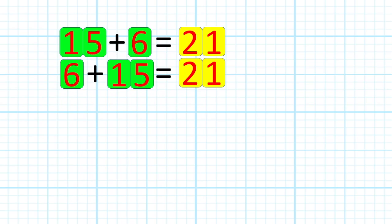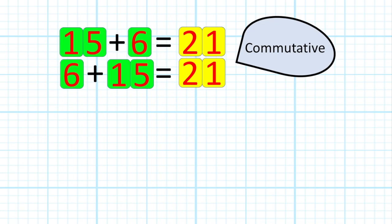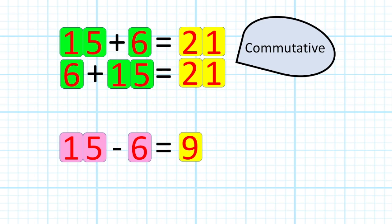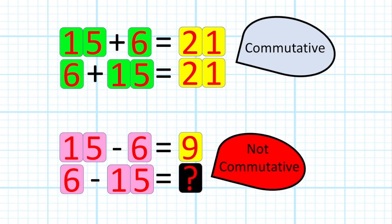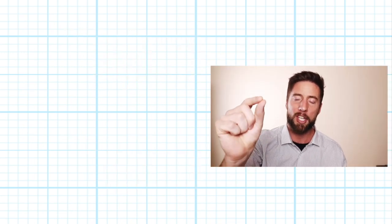Now if we look at that in terms of subtraction: if I have 15 subtract 6, I get 9, but I can't get the same answer by moving my numbers around—they are not commutative. If I have 6 take away 15, 6 subtract 15, I get myself in all sorts of trouble. I don't get the same answer. These numbers are not commutative.